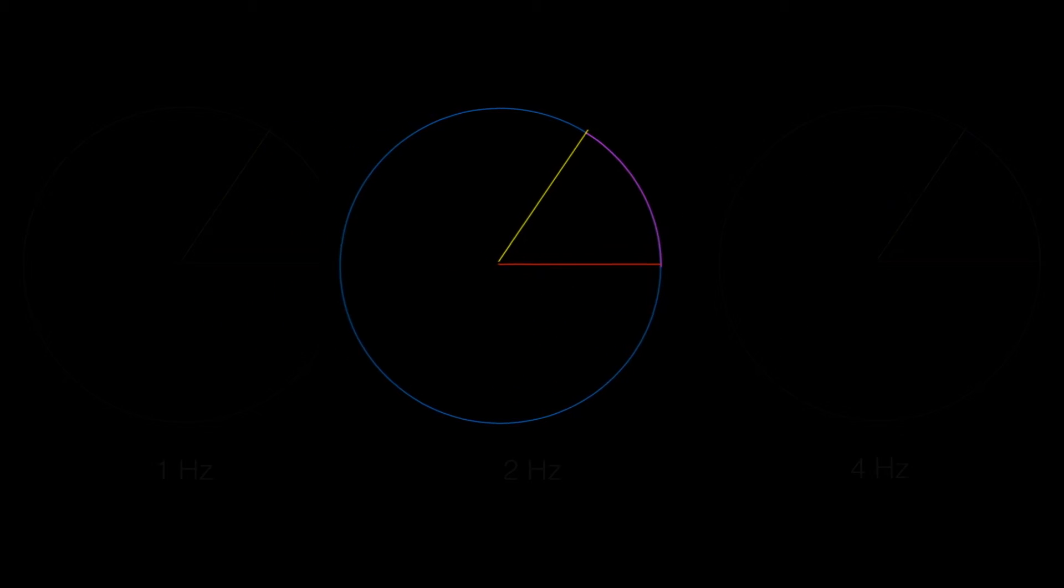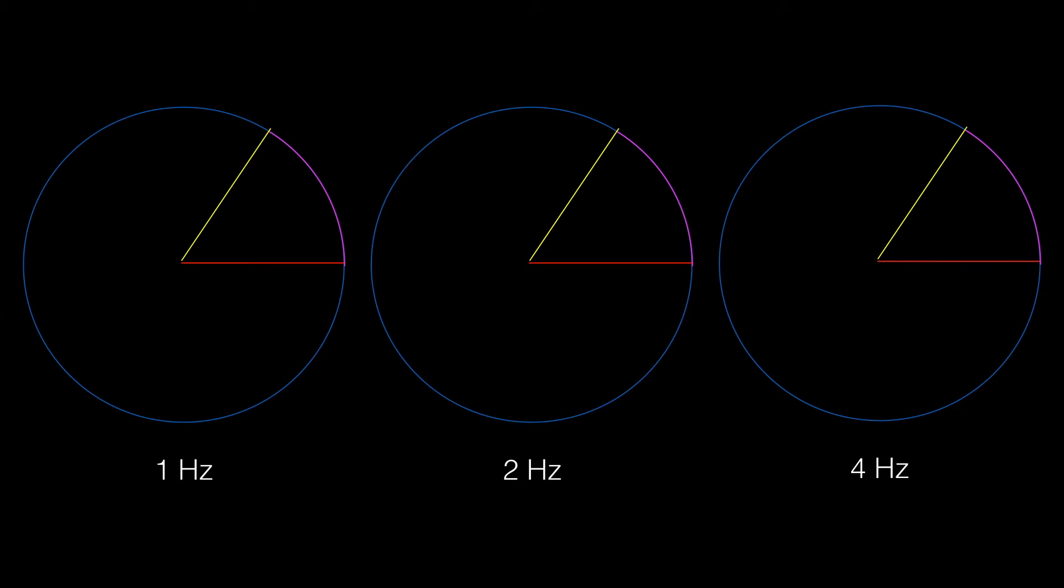Let's look at three circles or three frequencies: the first one will be one hertz, the second two, and the third one four hertz. You can see that the first one is going around roughly at one time a second, the second one two times a second, and the third one at four times a second.